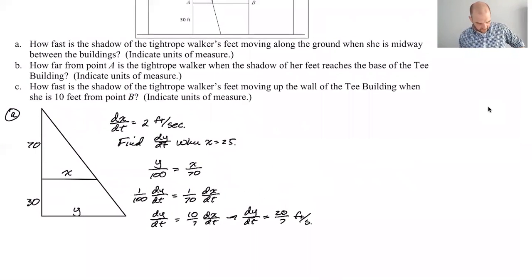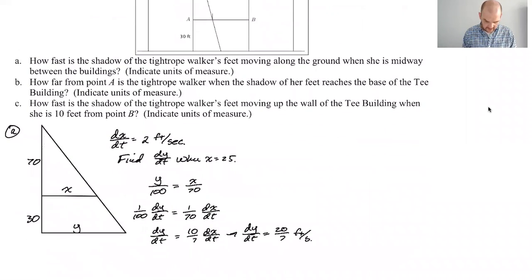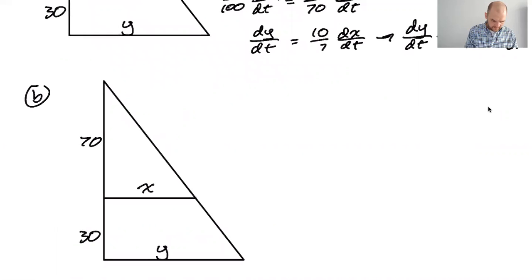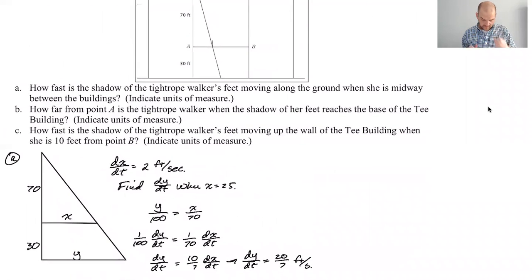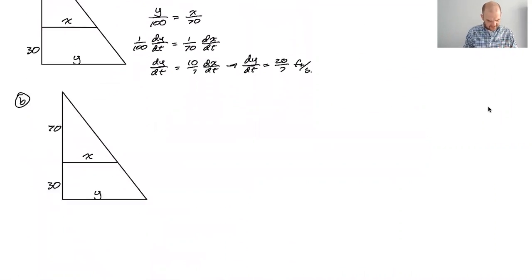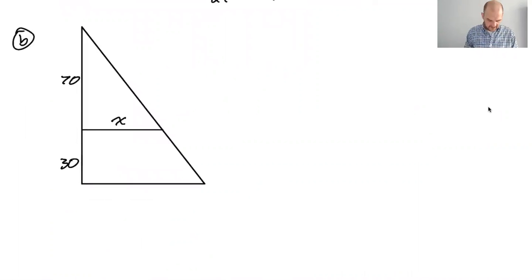How far from point A is the tightrope walker when the shadow of her feet reaches the base of the T building? So now this is the thing that I was having trouble with before, because I initially thought like when she was halfway, her feet would be there, not necessarily the case. So I really need this picture again. So in problem B, the shadow is gonna hit the base of the building. It's like the more difficult it is to understand a question, the more likely they are to ask a simple question to get you oriented to it.